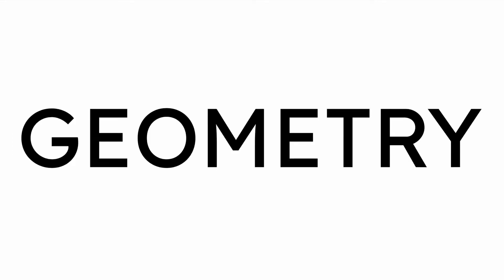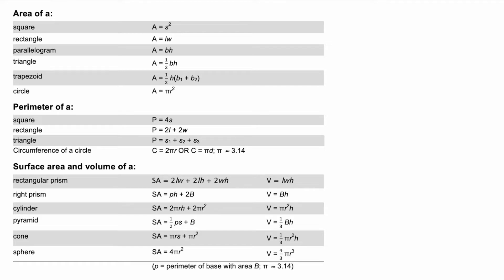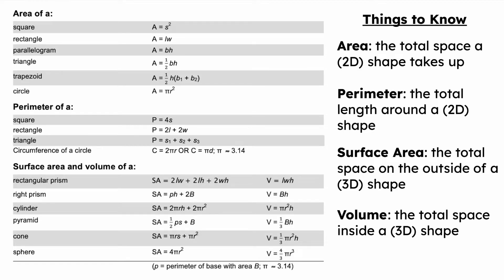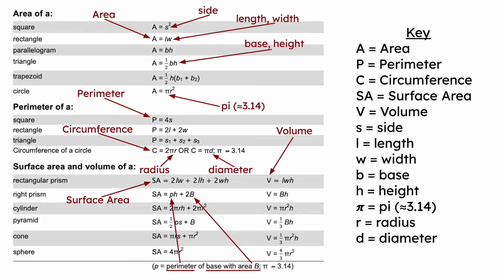Let's dive into the actual formula sheet, starting with geometry. There are some basic things you need to know: area, perimeter, and volume. Circumference is just a way to say the perimeter of a circle. There are also a lot of letters and abbreviations — capital C is circumference, little b is base, and so on. You should know these because a formula like 'SA = pH + 2B' won't make sense otherwise. That means: surface area equals the perimeter times the height plus two times the base area.